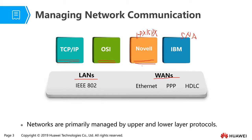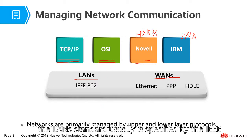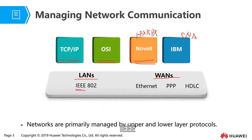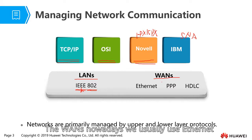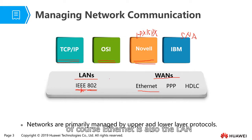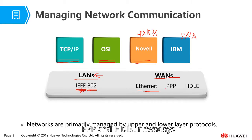The LAN standard is usually specified by the IEEE. Under the IEEE, there is an office called 802 that specifies many standards about LANs. For WANs, nowadays we usually use Ethernet — though Ethernet is also a LAN standard, it now also has a WAN standard. PPP and HDLC are also used for WAN connections.